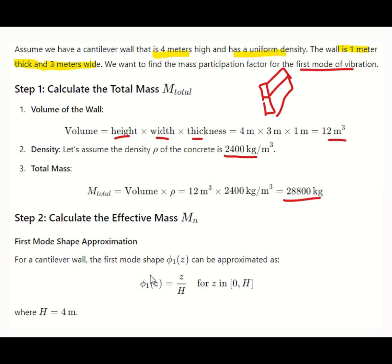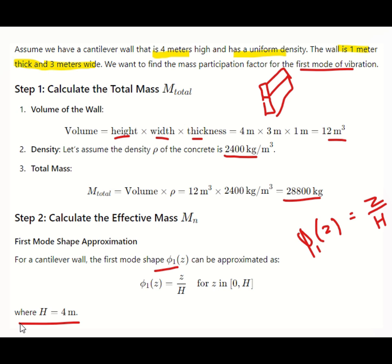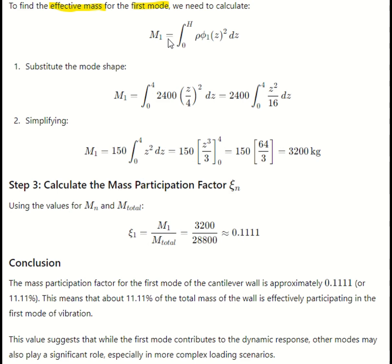For the effective mass calculation, the first mode shape phi_1(z) for a cantilever wall is approximated as phi_1(z) = z/H, where z is the elevation and H equals 4 meters. To find the effective mass for the first mode, we calculate M_1 as the integral from 0 to 4 of rho times (z/H)² dz, where rho is the mass per unit height. Substituting the mode shape, M_1 equals rho times the integral from 0 to 4 of (z/4)² dz.